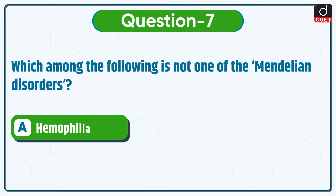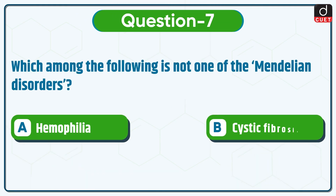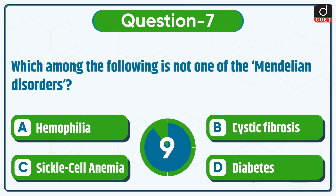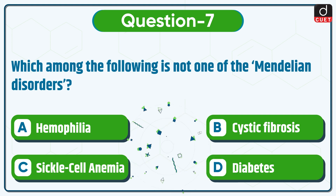Next question is: which among the following is not one of the Mendelian disorders? Hemophilia, cystic fibrosis, sickle cell anemia, or diabetes? The correct answer is option D, diabetes.